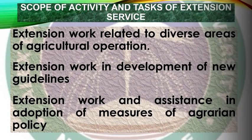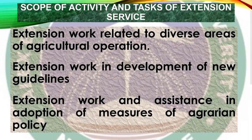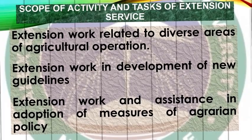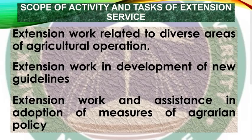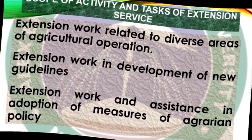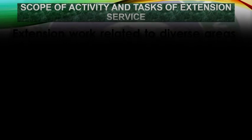Regarding the scope of activities and tasks of extension service: extension has the objective to assist farm family holdings in the improvement of methods and techniques of agricultural production. It seeks to develop new information and abilities and apply them directly on the farm through technology transfer. Extension work relates to diverse areas of agricultural operations.